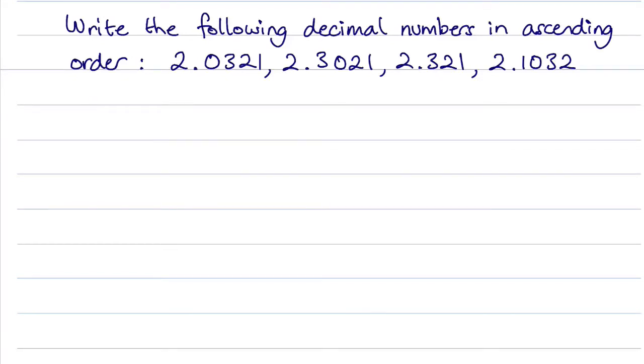In this question we're asked to write the following decimal numbers in ascending order. We've been given four decimal values. Now the first thing I like to do is write them in a vertical alignment.